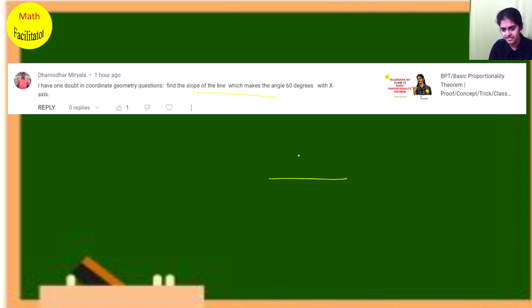So suppose this is x axis, y axis. Damodhar is asking to find the slope of the line which is making 60 degree with x axis. Suppose this is a line, it is making 60 degree with x axis.